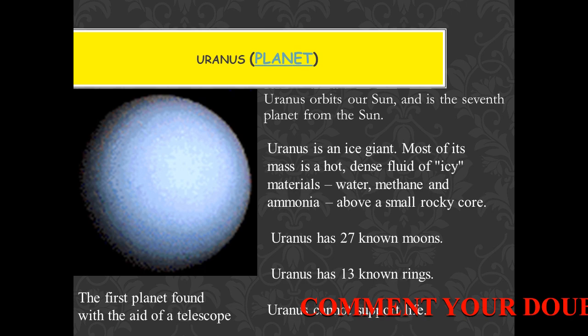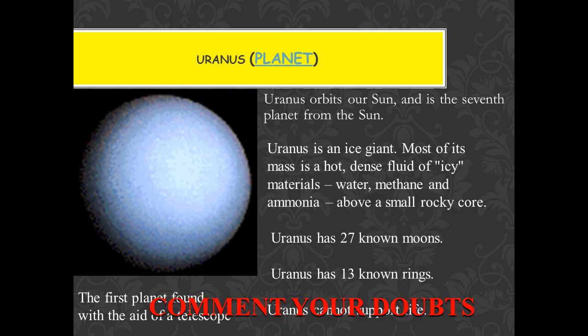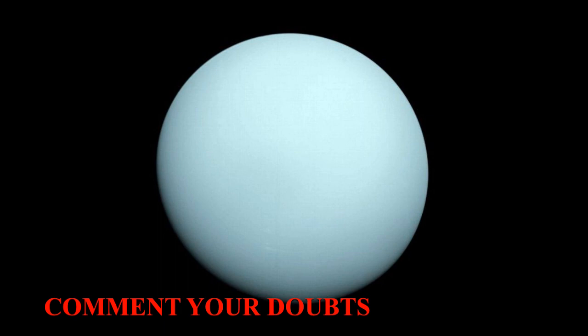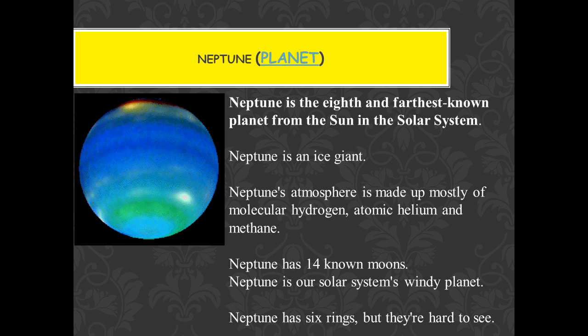Next is our next planet, Uranus. Uranus is the 7th planet of the solar system. It is also known as the ice giant, and its Hindi name is Arun. It also has rings and is the 3rd largest planet in our solar system. It is a gas giant without any solid surface, and it has 27 moons.